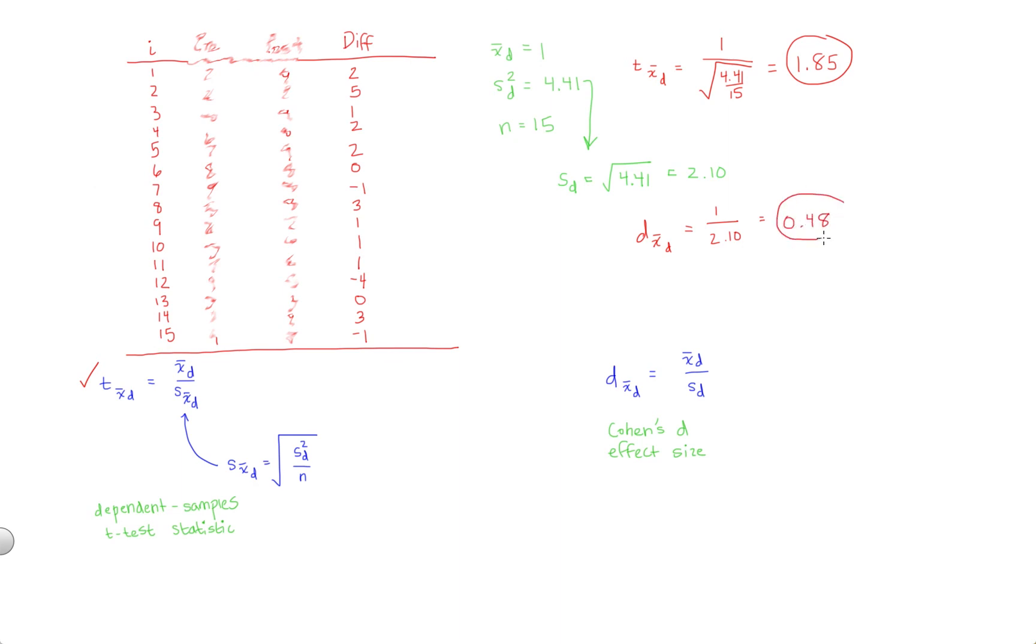So now let's plug in and let's calculate the effect size. So d sub x bar sub d, this is the Cohen's d effect size of the mean difference scores. That's going to be 1 over 2.10, which comes out to 0.48. And we interpret this the same way as we have in the past. This is almost a large effect. Remember 0 to 0.2, small effect. 0.2 to 0.5, medium effect. Anything above 0.5 is a large effect. So this is medium to large, I would say. And that's how you calculate the dependent samples t-test and the Cohen's d effect size associated with that test.